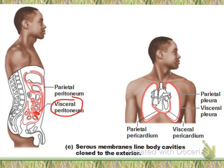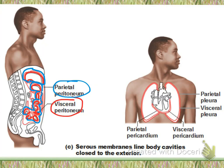When we look at the visceral peritoneum, we're talking about the layer directly covering the abdominal organs. When we talk about the parietal peritoneum, we're talking about the outer covering layer. The space between the parietal peritoneum and visceral peritoneum is called the peritoneal cavity.